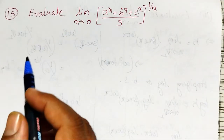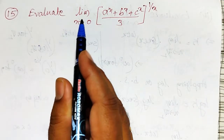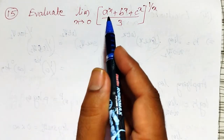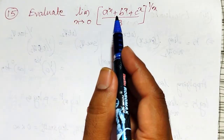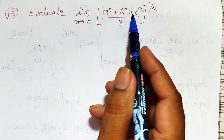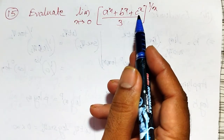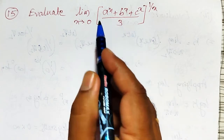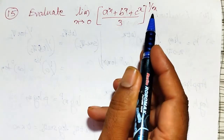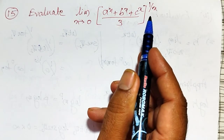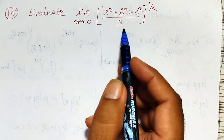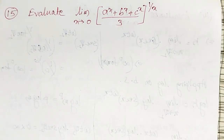In this video, I am going to evaluate the limit as x tends to 0 of (a^x + b^x + c^x) / 3, whole raised to 1/x. This is a very important example that has been asked many times in the examination.